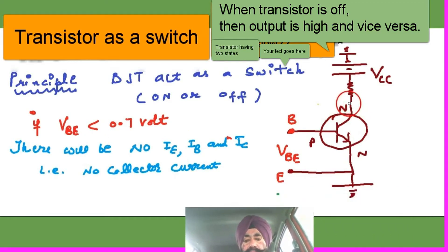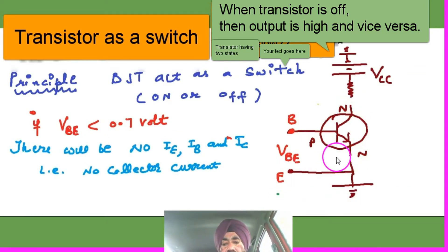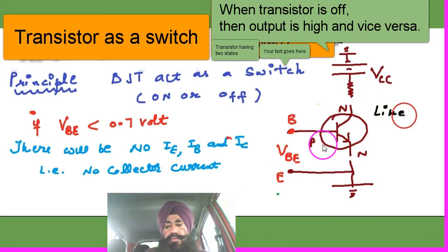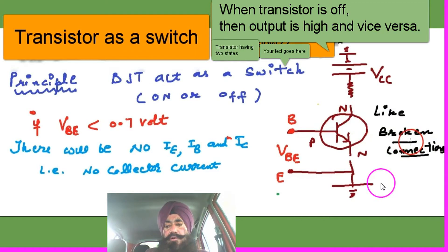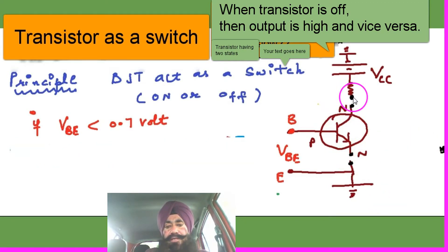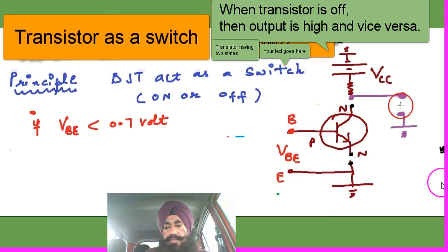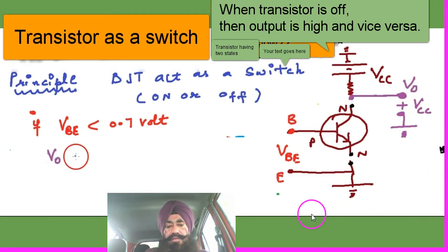That means this point is broken. Output is taken at this point, and here the voltage will appear as VCC — a high voltage. So when the transistor is off, the voltage appears as a high voltage VCC.